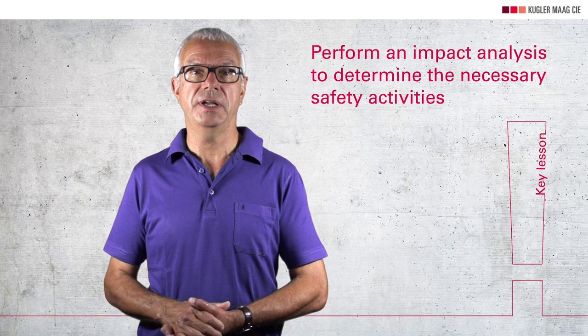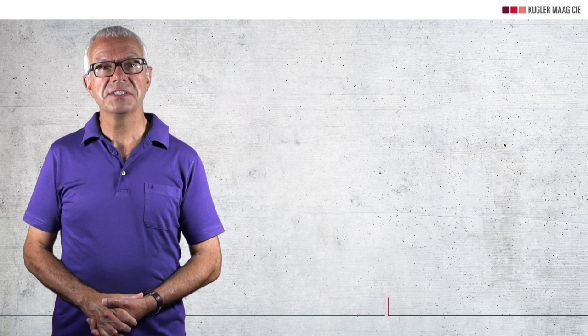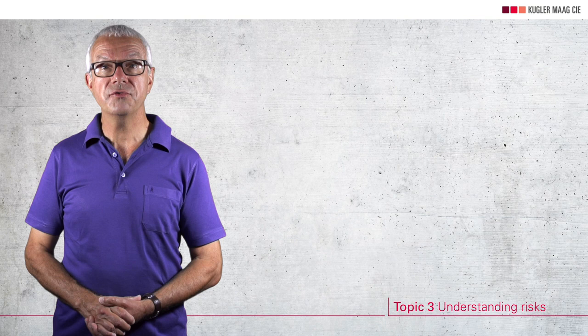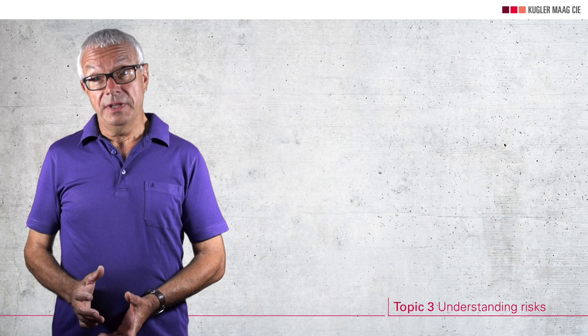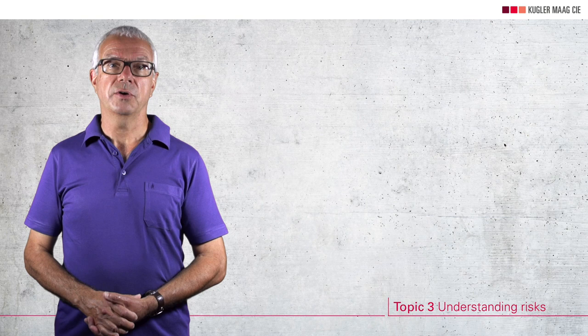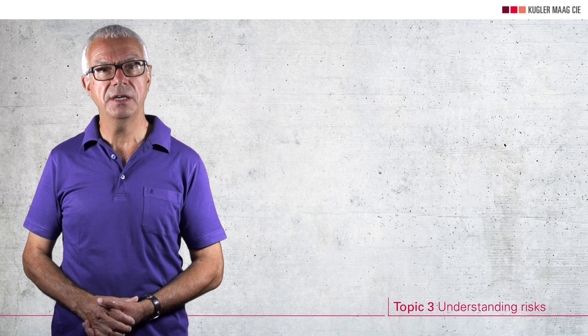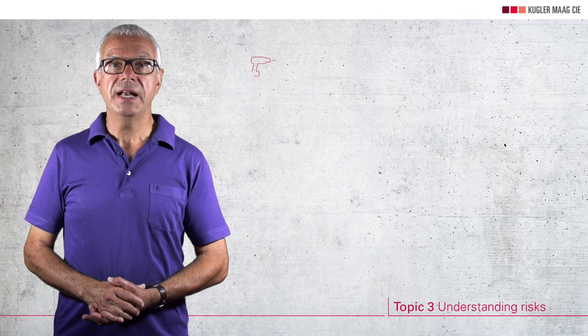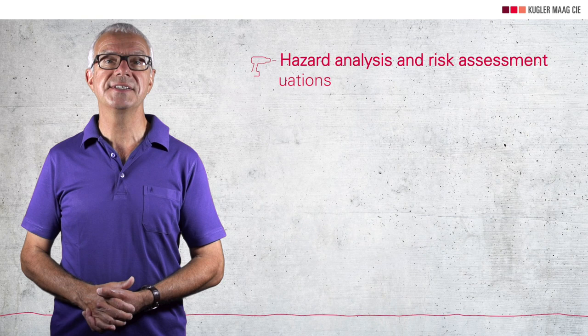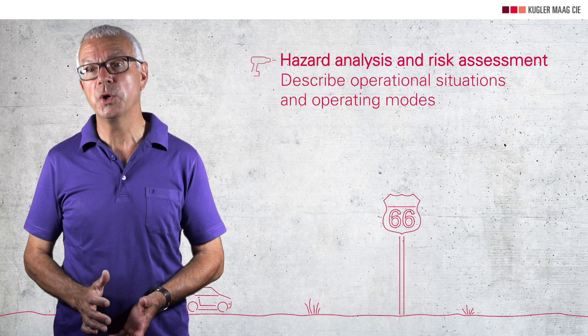Our third topic is about understanding the risks posed by our product. The risk to human life within our item has to be estimated. Note that this is typically an activity to be performed by the carmaker. Depending on this risk assessment, more — and sometimes less — must be done technically and in organizational terms. The hazard analysis and risk assessment begins with a description of operational situations and operating modes, for example driving on a highway. The hazards that arise in the event of failures in our item are then determined.